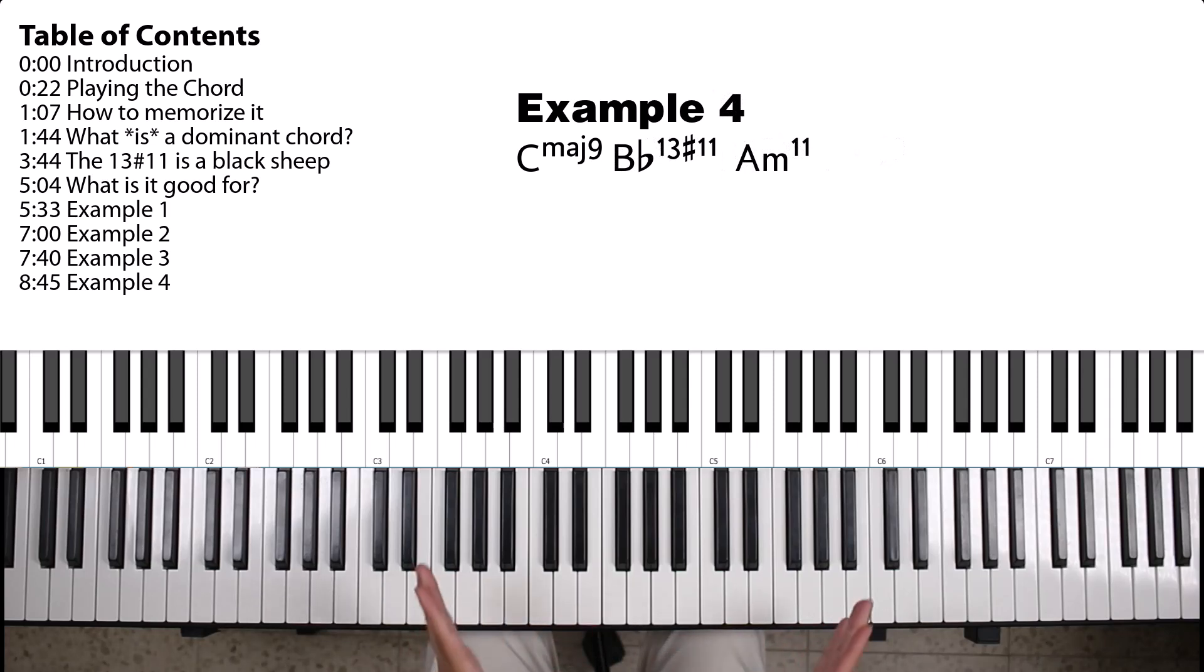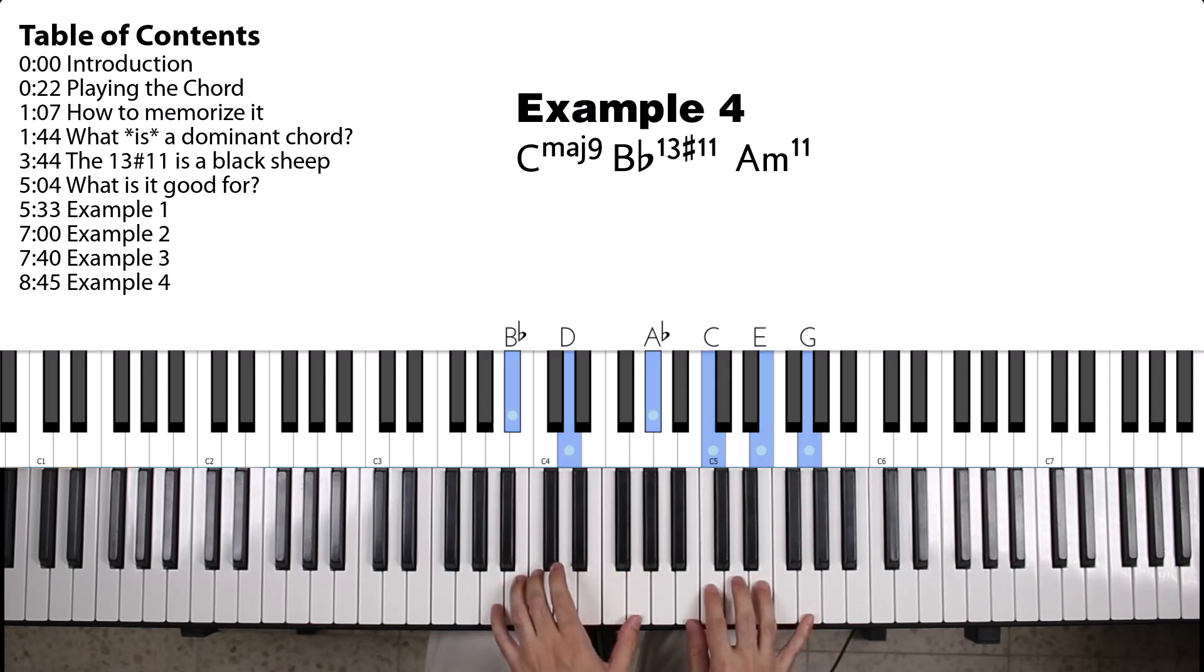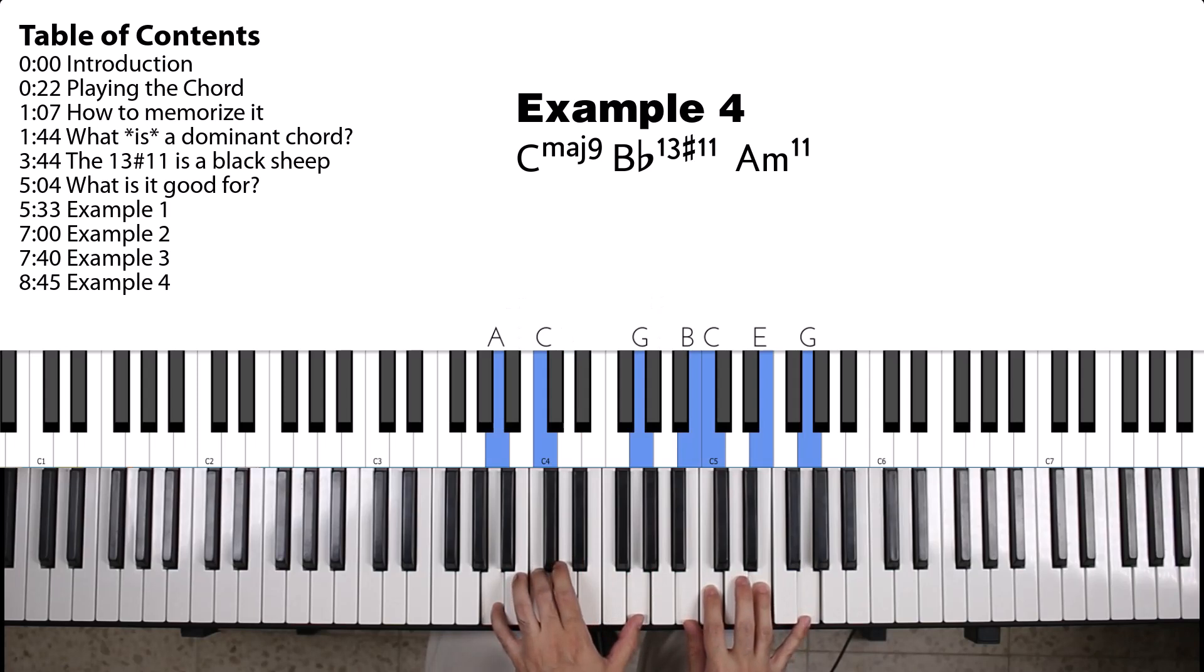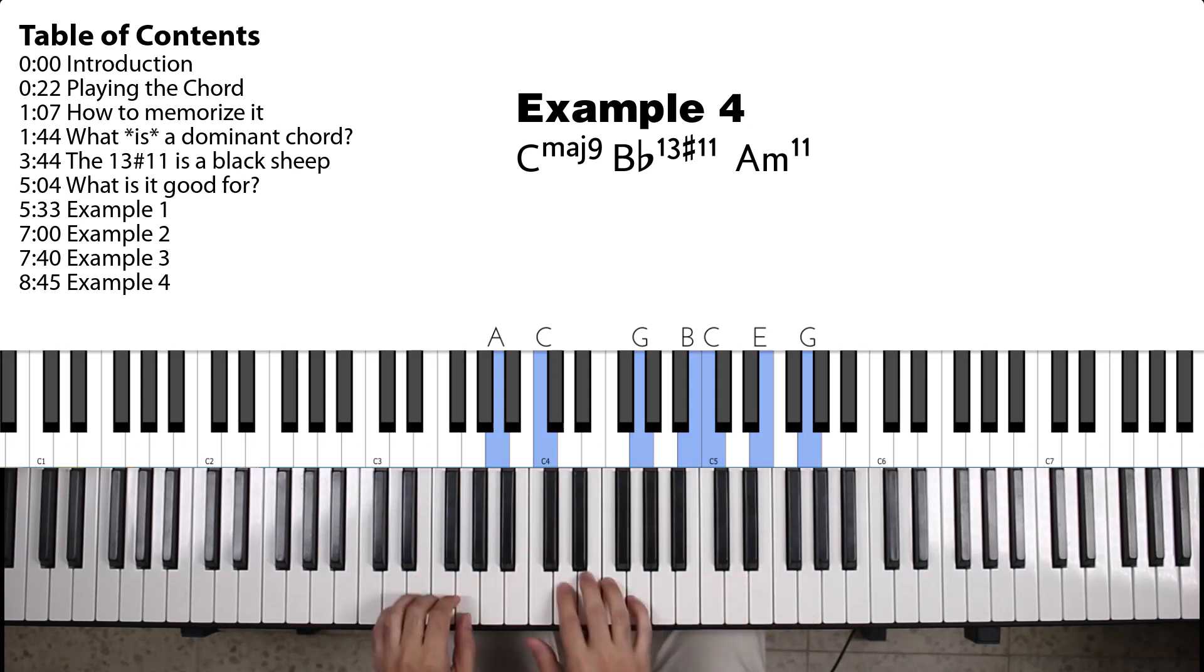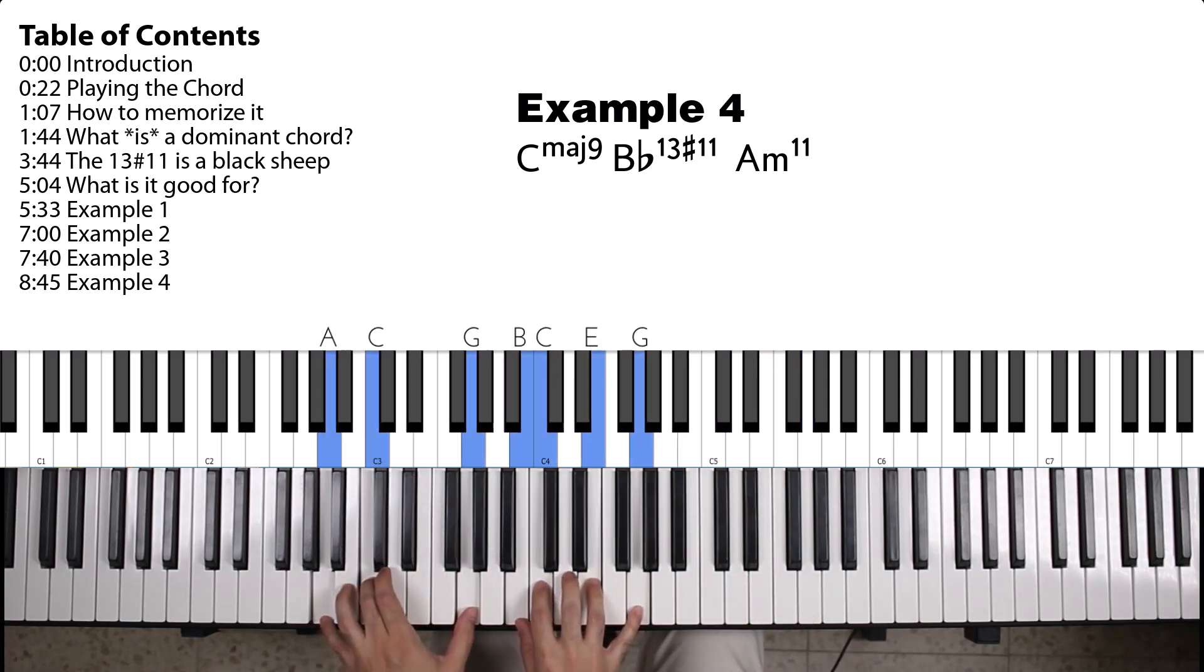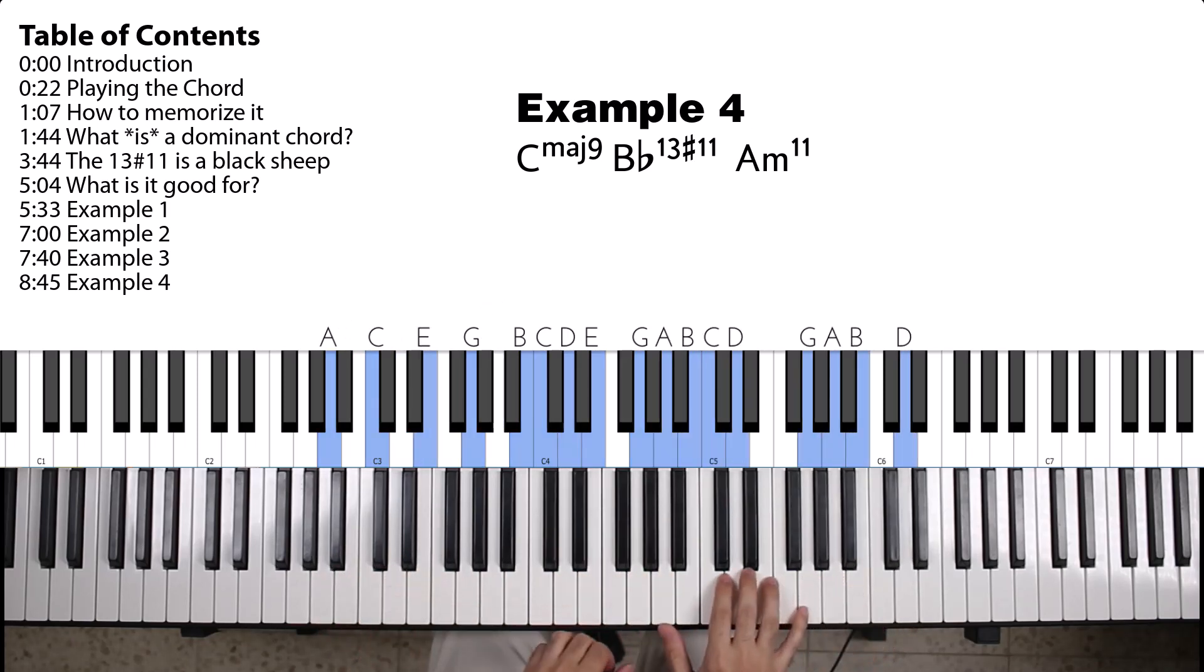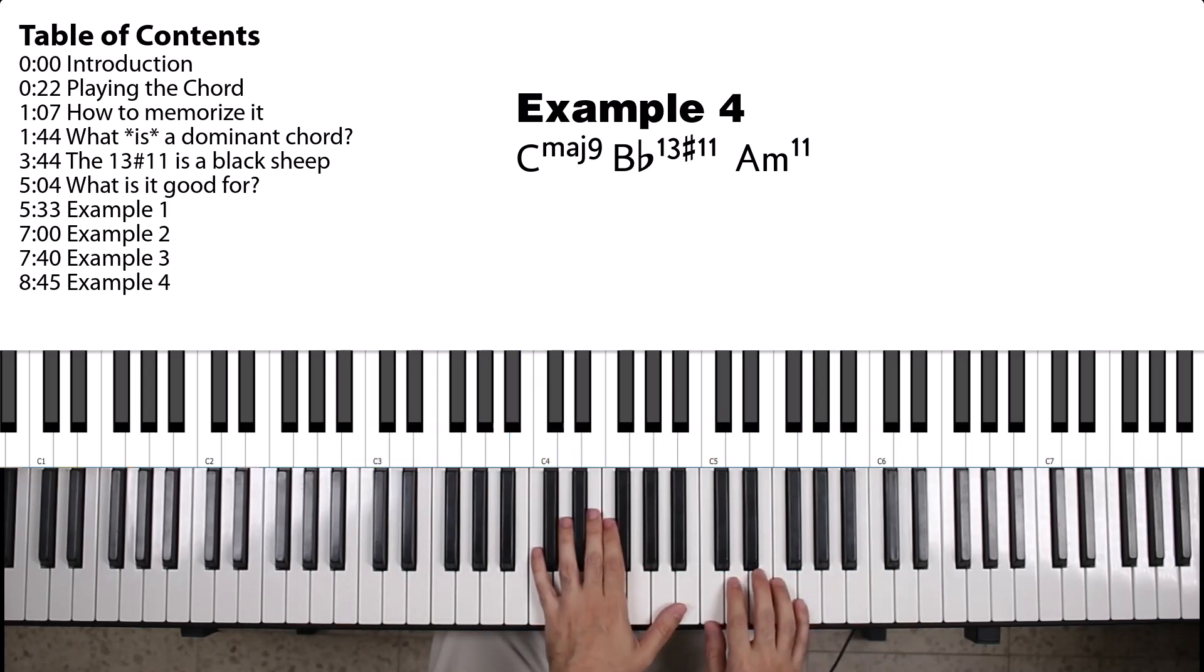I said I'll give three examples, but let me give one more. And in this case, I'm going to use a B flat 13 sharp 11, which will resolve chromatically a semitone down to an A minor 9. So, I could do something like... Right? Maybe this would sound a little bit better up an octave.